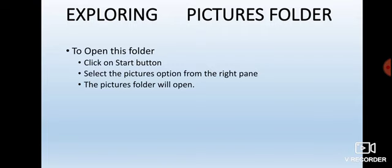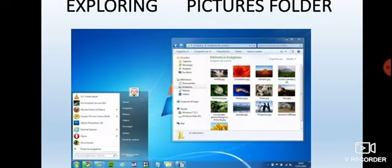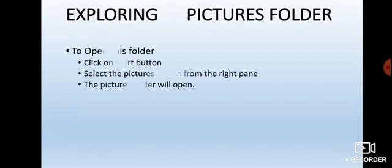To open that folder, first click on the Start button. After clicking on the Start button, select the Pictures option from the right pane. There is a pane available on the right side of the My Computer window. Go to the Library and from Library click on Pictures. The Pictures folder will open. From the Start button, using the right pane, select Pictures and the Pictures window will open.